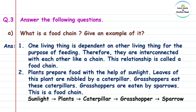Plants prepare food with the help of sunlight. Leaves of the plant are nibbled by a caterpillar. Grasshoppers eat these caterpillars. Grasshoppers are eaten by a sparrow. This is a food chain. For example: sunlight → plants → caterpillar → grasshoppers → sparrow. Plants are eaten by caterpillar, grasshoppers are eaten by sparrow — so this is a food chain.